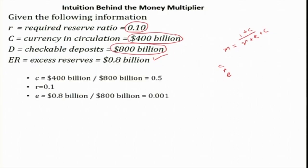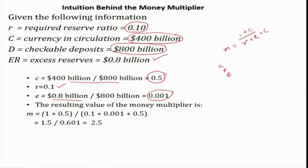Plugging these values into the formula — (1 plus 0.5) divided by (0.1 plus 0.001 plus 0.5) — we get the money multiplier equals 2.5.